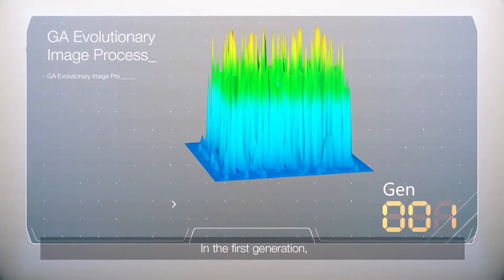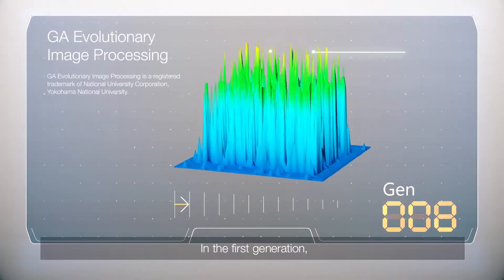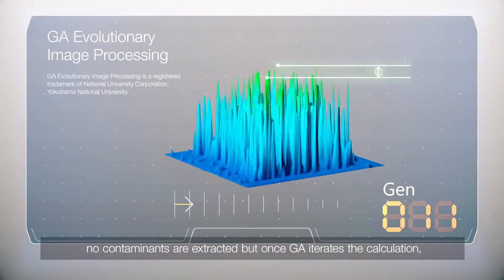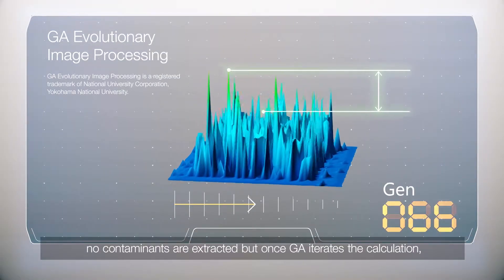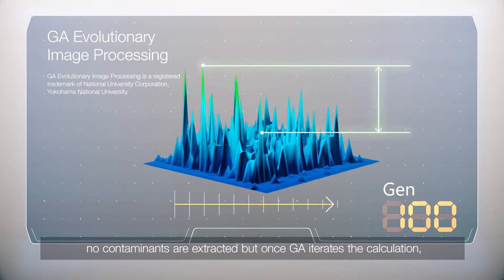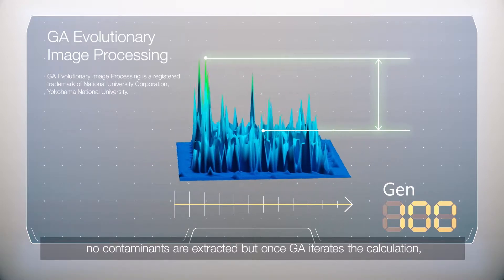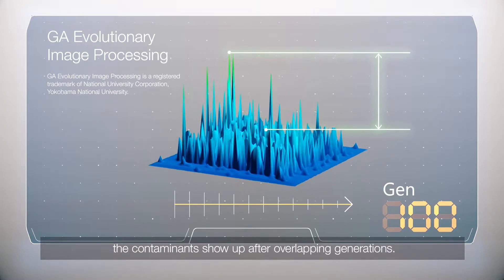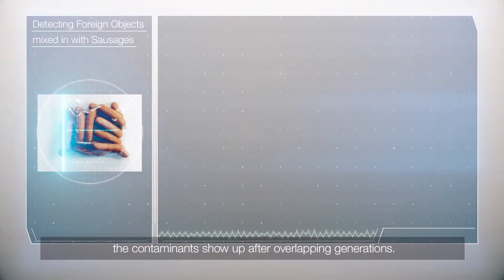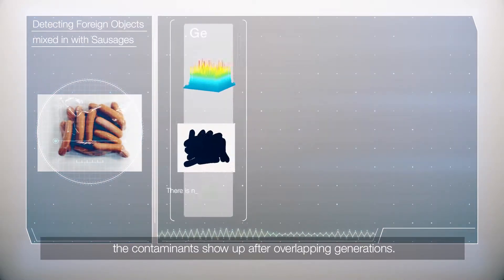In the first generation, no contaminants are extracted, but once GA iterates the calculation, the contaminants show up after overlapping generations.